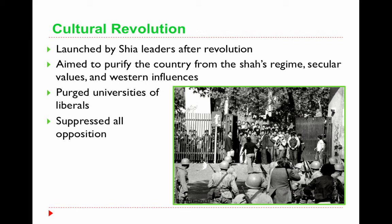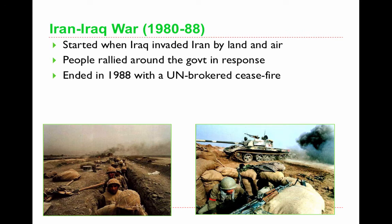You might think about how this is similar to what happened in Russia or China in your comparative revolution assignment. Other significant events: from 1980 to 1988, Iran and Iraq were at war, starting when Iraq invaded Iran by land and air. This actually solidified and legitimized the new government of Iran — people rallied around the government in response, as is typical in times of crisis. It finally ended in 1988 when the UN brokered a ceasefire.